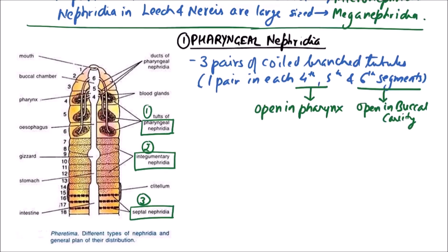As all the ducts of nephridia open in either pharynx or buccal cavity, the three pairs of pharyngeal nephridia give rise to three pairs of ducts that will open in the gut. Because of this pharyngeal nephridia are also known as enteronephridia, that is opening in the gut.